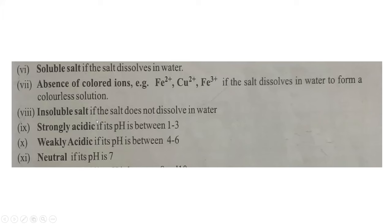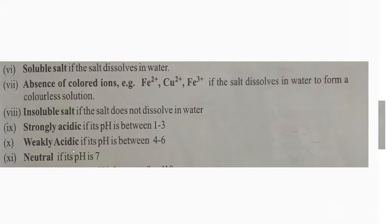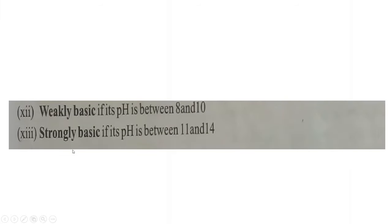If given a universal indicator and pH chart, check the solution's pH. If pH is 1–3, the inference is 'strongly acidic.' pH 4–6 is 'weakly acidic.' pH 7 is 'neutral.' pH 8–10 is 'weakly basic.' pH 11–14 is 'strongly basic.'